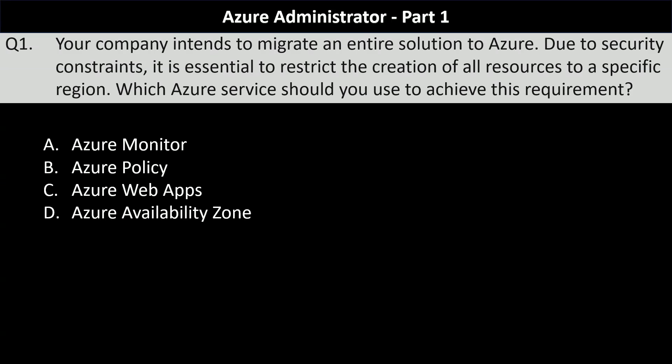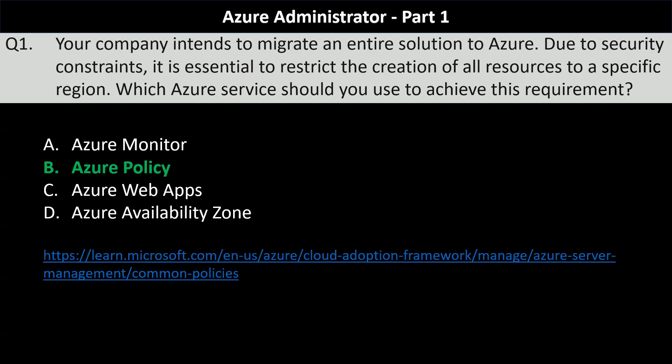The correct answer is option B, Azure Policy. Common use cases for Azure Policy include implementing governance for resource consistency, regulatory compliance, security, cost, and management. Some common examples include restricting resource regions — which is what is being asked in this question — as well as blocking certain resource types or restricting VM sizes.